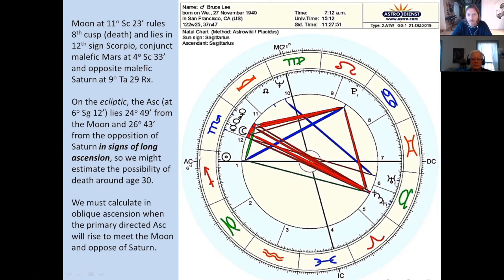The ascendant is at 6 of Sagittarius, and it is on the ecliptic about 24 degrees from the moon. If we measure from the ascendant up to the opposition of Saturn, we get about 26 degrees — a couple degrees later. I'm speculating that since the ascendant rules his vitality, his life force, his body, when the ascendant by primary directions hits this cluster of moon, Mars, and Saturn, he's at risk of death. Also, from the Vedic angle, the second lord Saturn and the seventh lord Mercury are the two maracas — they're also involved. So this region is bad news for him: he's got the lords of 6, 8, and 12 here, the two maraca planets here, and his ascendant is going to come up here.